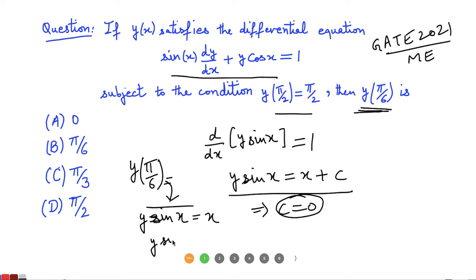y sin of pi by 6 equals pi by 6, and sin of pi by 6 is half, so y equals pi by 3. That means option C, pi by 3, is numerically correct.